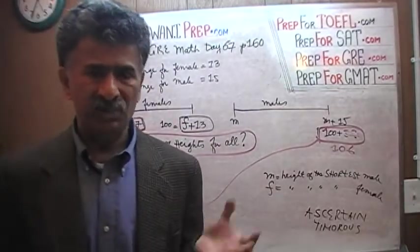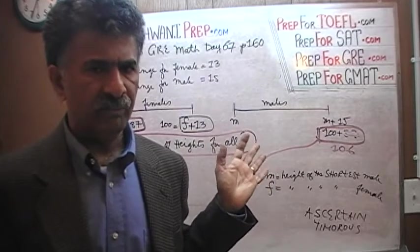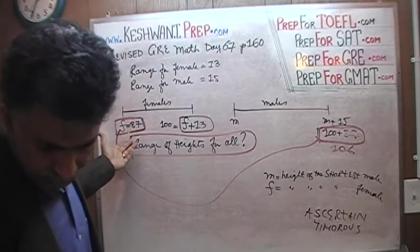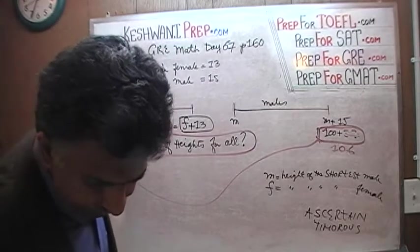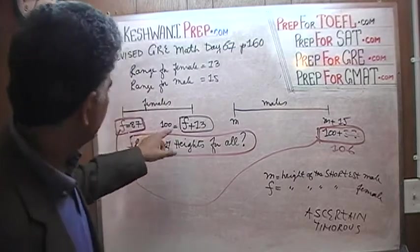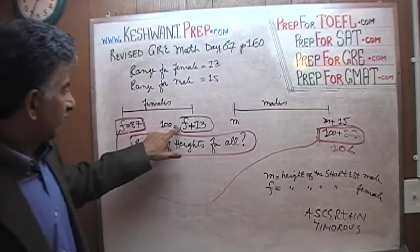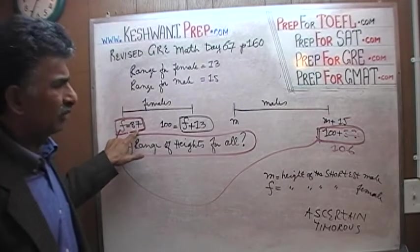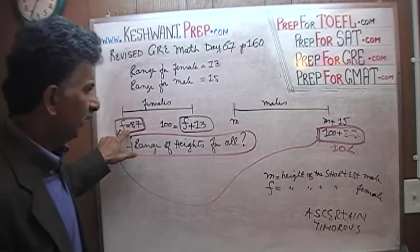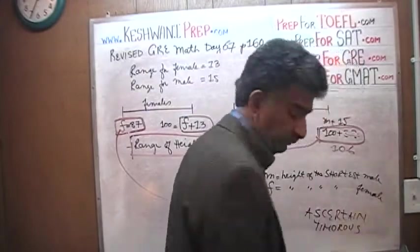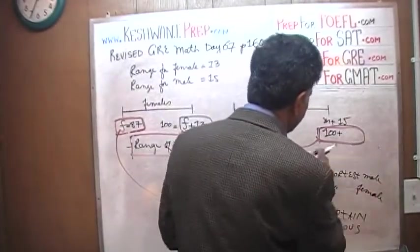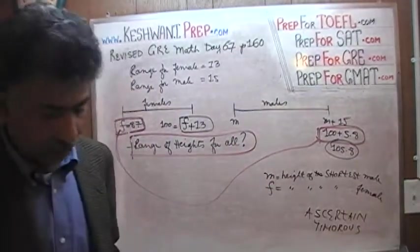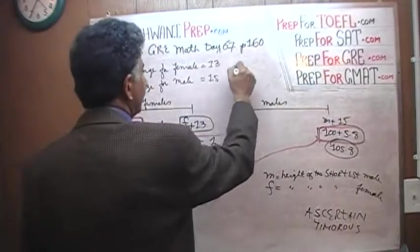The question here is not what is the exact range, which is why I'm taking liberties with the numbers, because they're not asking you what the range is. The question is, can you establish the range? The answer is, of course we can. The exact number would have been something different because the female was 13.2, so I would subtract 13.2 not 13. It doesn't really change anything. The question is, can you establish the range? The answer is yes. So the first statement is enough. Statement A is enough.